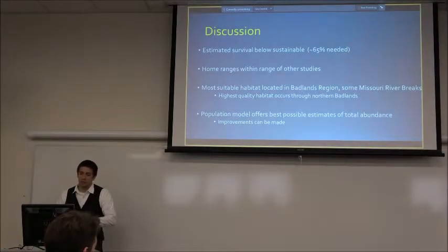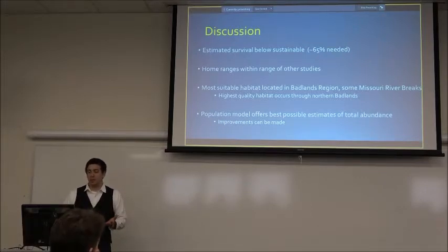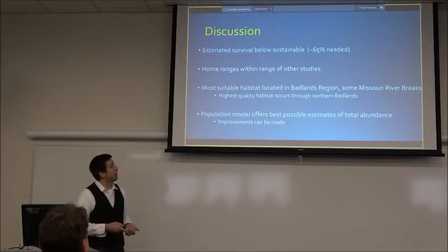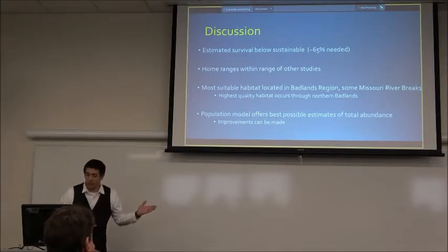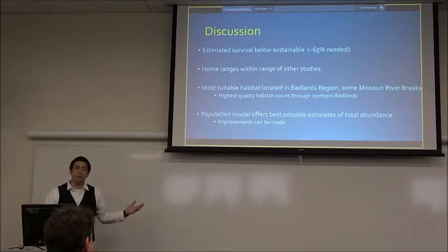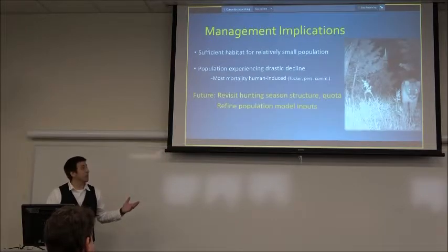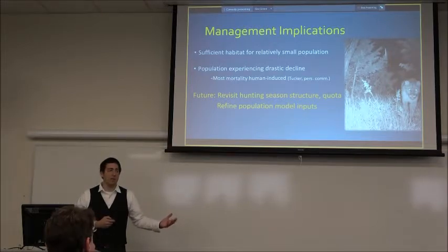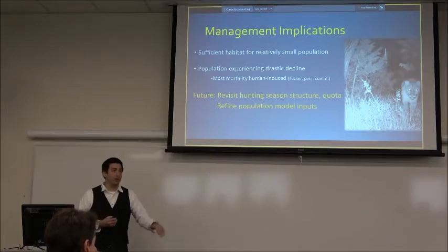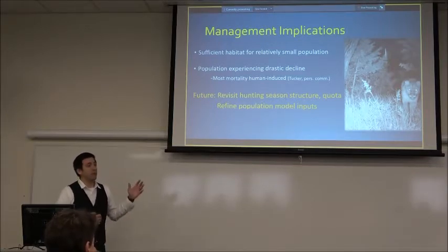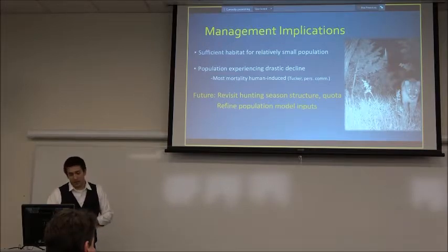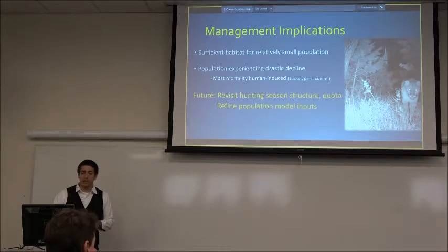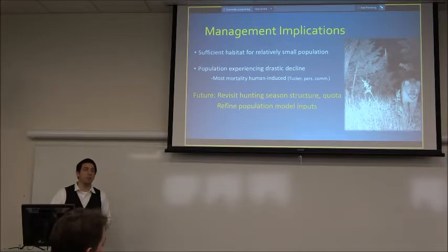In summary: estimated annual survival of 61.3% is below the approximately 65% generally considered sustainable. Home ranges were unremarkable. Most suitable habitat is in the Badlands. The population model, while needing refinement, provides the best abundance estimates to date. North Dakota has sufficient habitat for a small lion population, but it is in drastic decline driven primarily by human-induced mortality — both harvest and non-harvest. Going forward, the state should revisit hunting season structure and quotas, and continue updating the model.